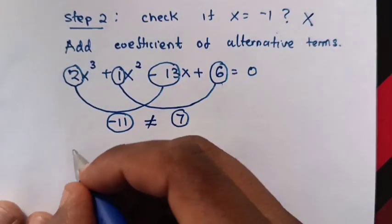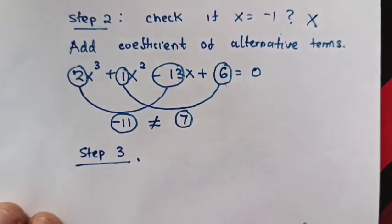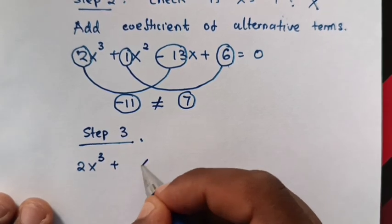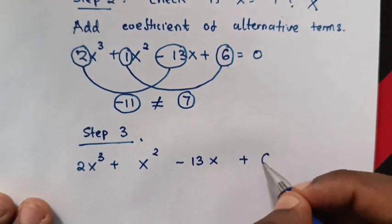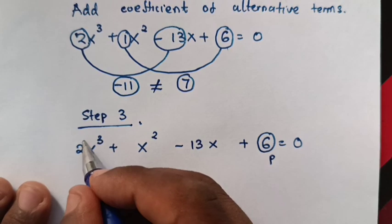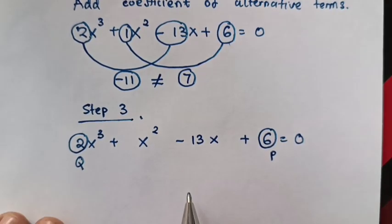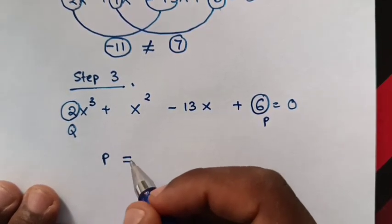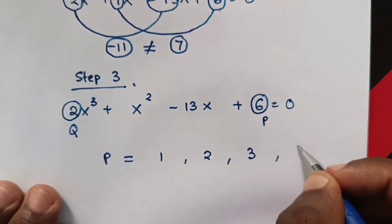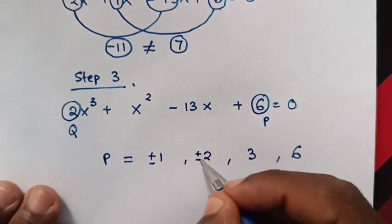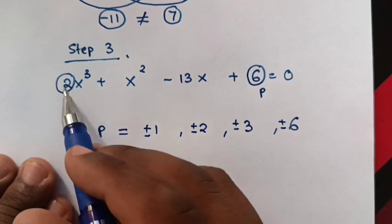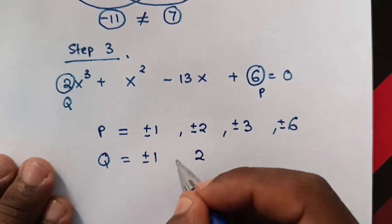In step 3, we are going to use synthetic division from this equation: 2x cubed plus x squared minus 13x plus 6 is equals to 0. The product here is 6, and the quotient coefficient is 2. The factors of 6 are plus or minus 1, plus or minus 2, plus or minus 3, and plus or minus 6. The factors of 2 are plus or minus 1 and plus or minus 2.